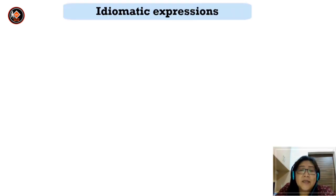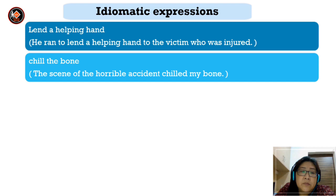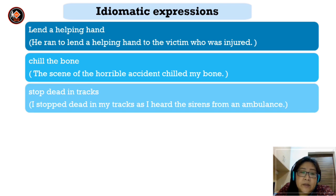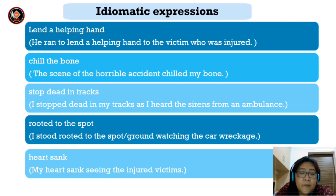You can use some idiomatic expressions such as 'lend a helping hand' — for example: 'I ran to lend a helping hand to the victim who was injured.' 'Chill the bone' — the scene of the horrible accident chilled my bone. 'Stop dead in tracks' — I stopped dead in my tracks as I heard the sirens from an ambulance. 'Rooted to the spot' — I stood rooted to the spot watching the car wreckage. And lastly: 'My heart sank' — my heart sank seeing the injured victims.